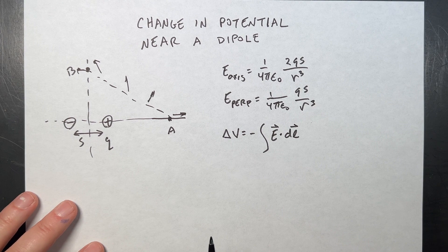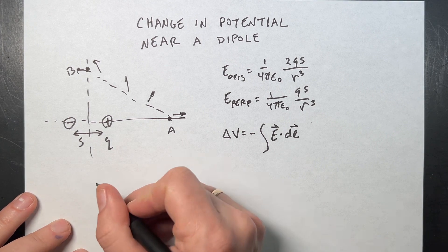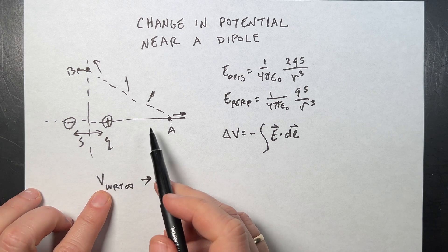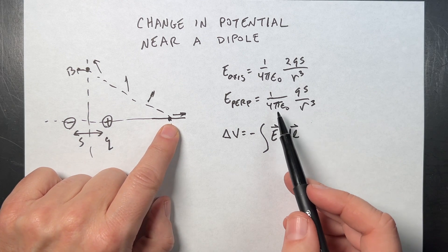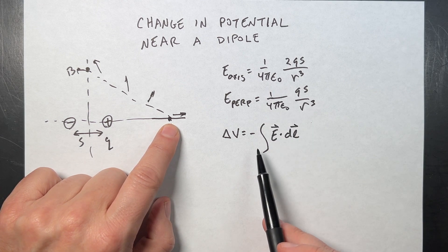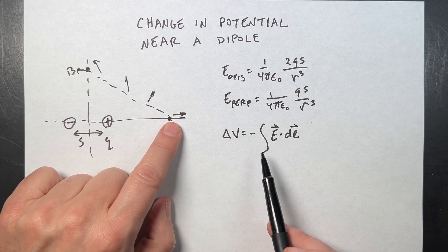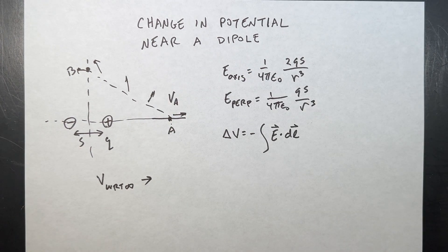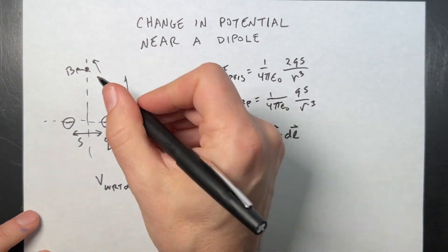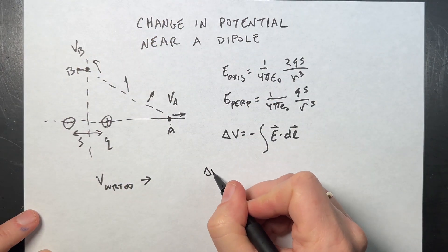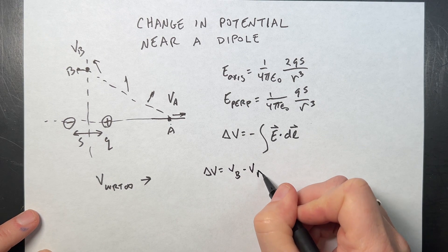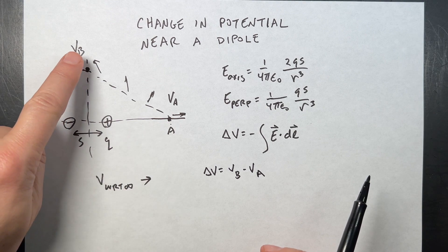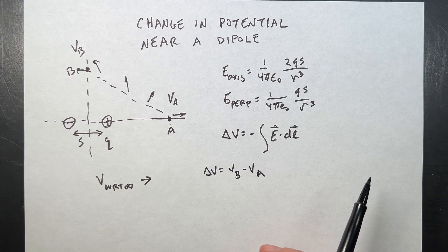If I calculate the potential at A with respect to infinity — call it VA — I can use the electric field expression to get a generic version for the potential with respect to infinity. Then I find VB the same way, and delta V equals VB minus VA. That's what I'm going to do.